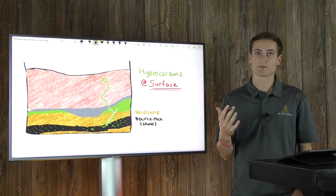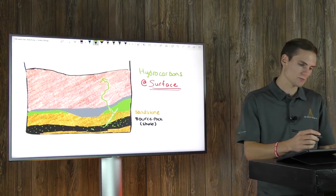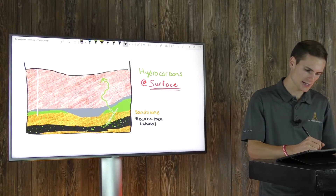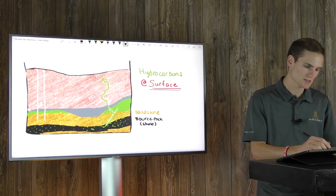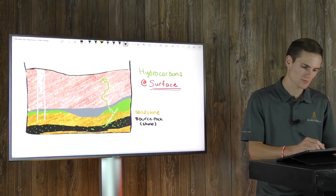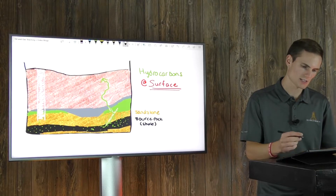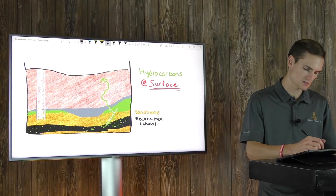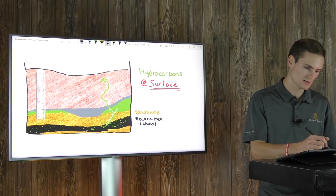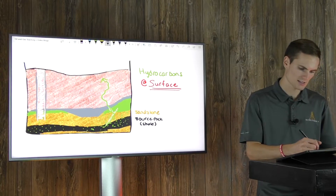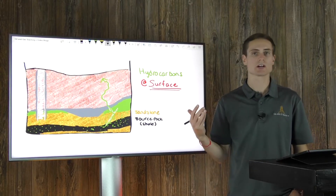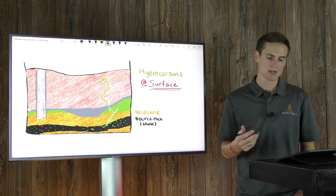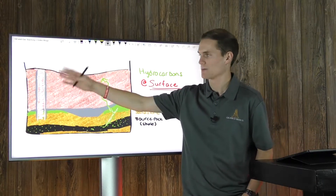Another way oil and gas can get to the surface is through industry activity. Whenever a wellbore is drilled, you've essentially created a conduit into that formation. The well should have cement behind the casing to protect it. But if that cement job has some type of integrity issue, you've created a conduit from those hydrocarbons directly to the surface. This is one way groundwater contamination has occurred, notably in Pennsylvania.